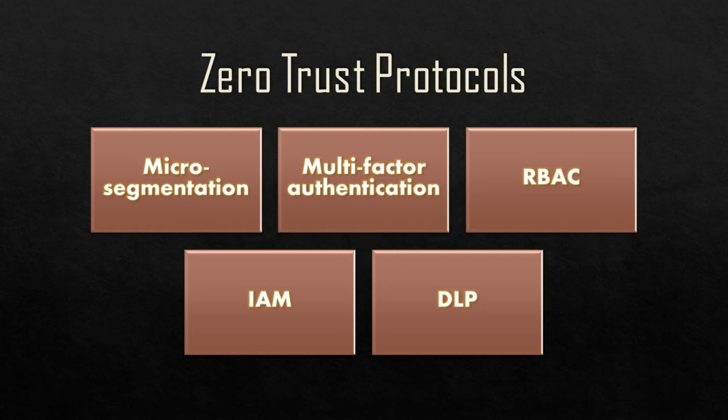Multi-factor authentication is important for all users, but it's a core piece of zero-trust architecture. Many networks implement MFA for endpoint users, but zero-trust implements it within the network as well. This creates extra layers of defense and continuously tests users, requiring proof of identity.